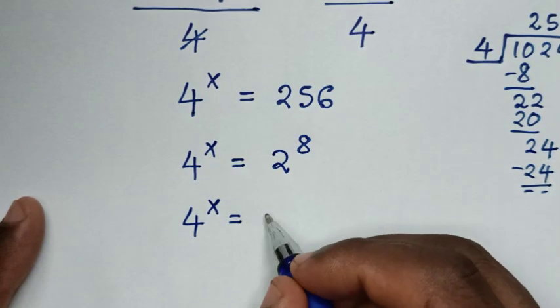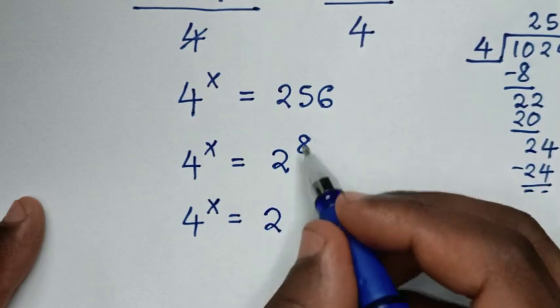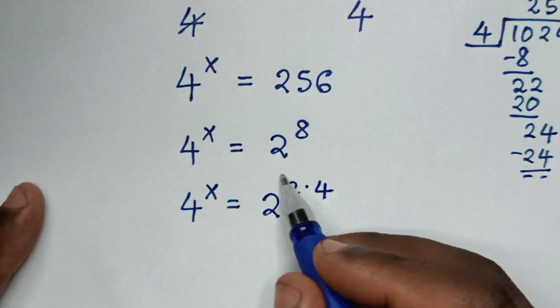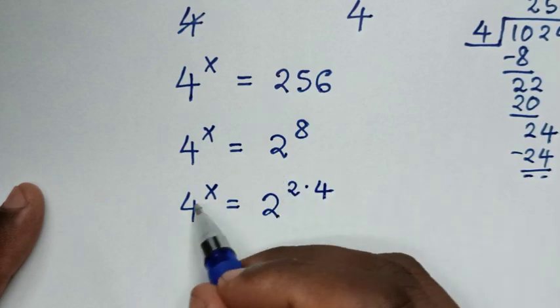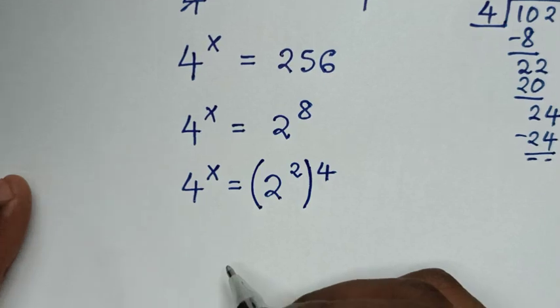2^8 is the same as 2 times 4. We want to make the base 4, so here you can place a bracket, this power of 2 inside the bracket.